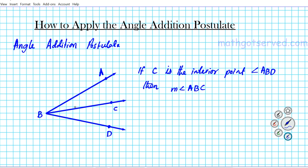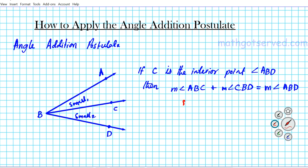then we're going to have the following equation: the measure of angle ABC — that's small angle one — plus the measure of angle CBD — that's small angle two — is equal to the measure of the big angle, which is the combination or addition of the two angles: the measure of angle ABD. So just remember: small angle plus small angle will give you the big angle,